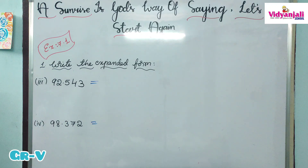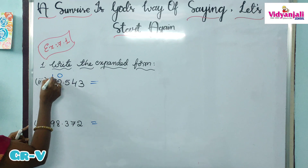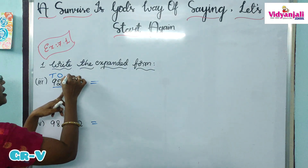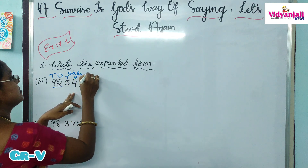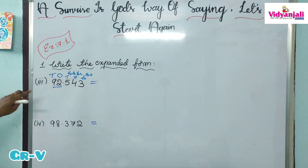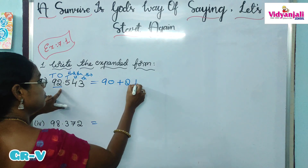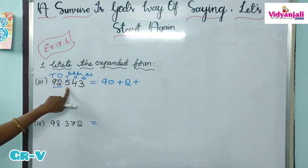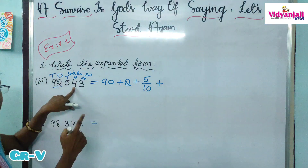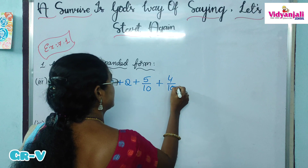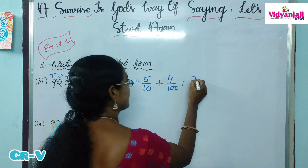Now let us write the expanded form. In the whole part, the place values are 1's and 10's. In the decimal part, the place values are 10ths, 100ths, 1000ths. Place value of 9 is 90. Plus, place value of 2 is 2. Plus, place value of 5 is 5 by 10. Place value of 4 is 4 by 100, because it is in the 100ths place. Place value of 3 — 1000ths means 3 by 1000.